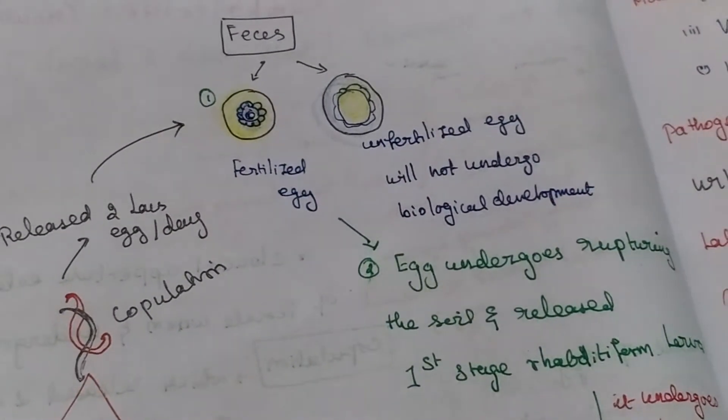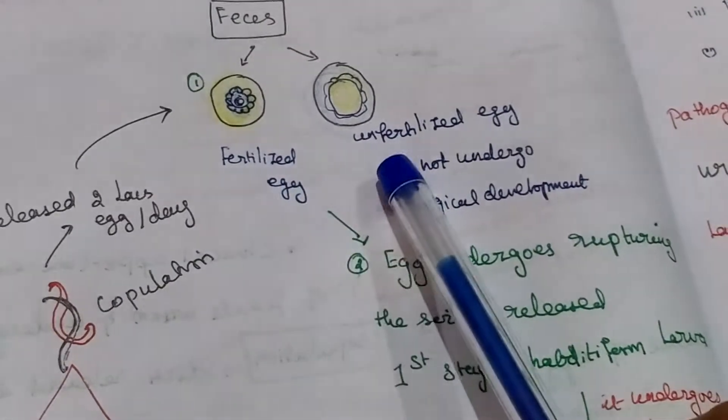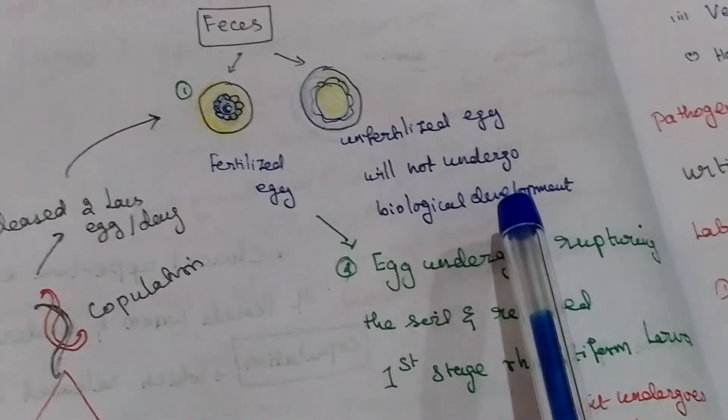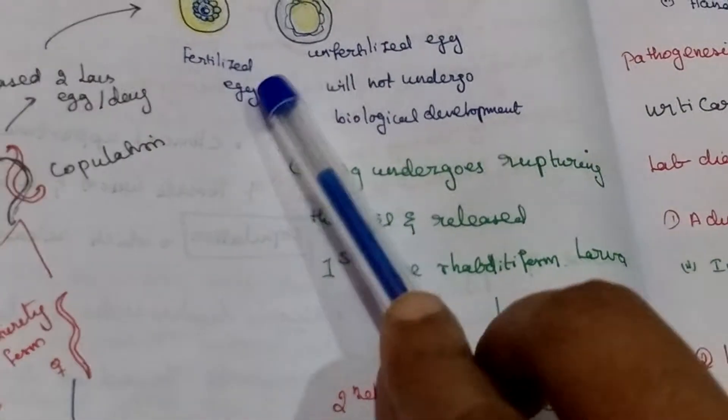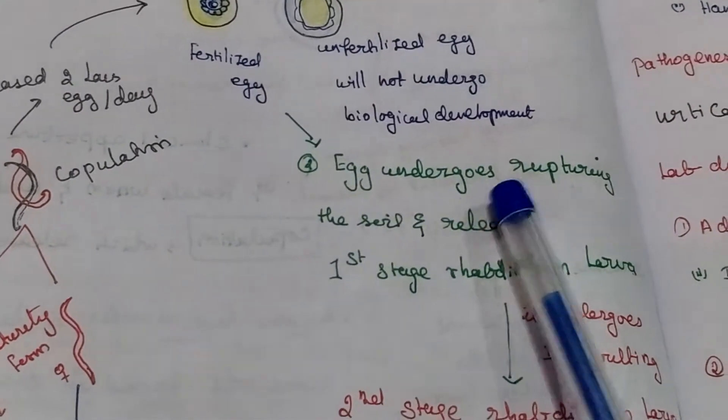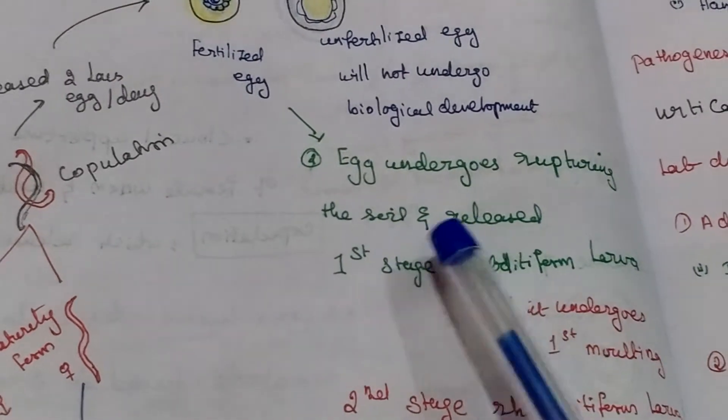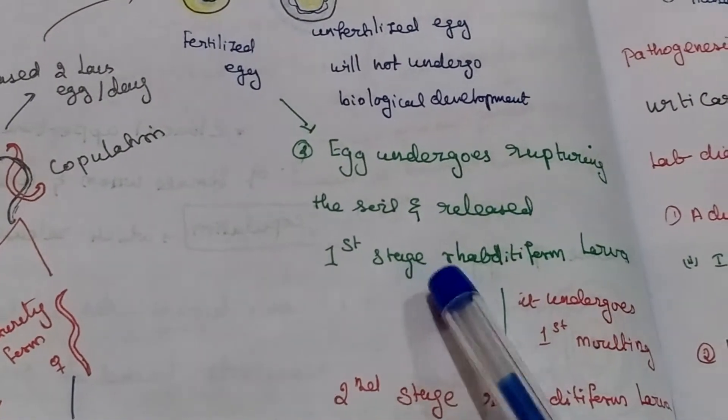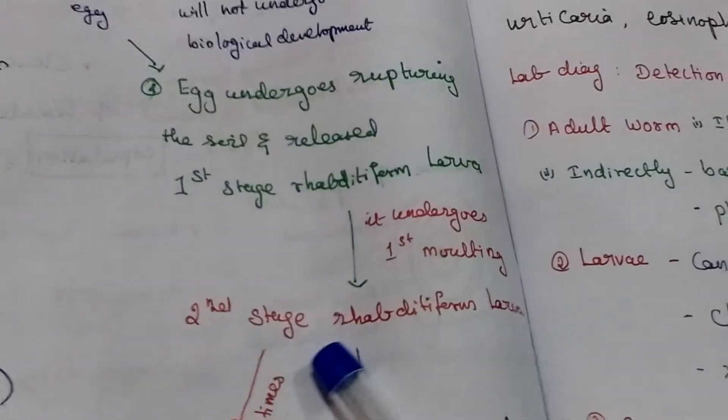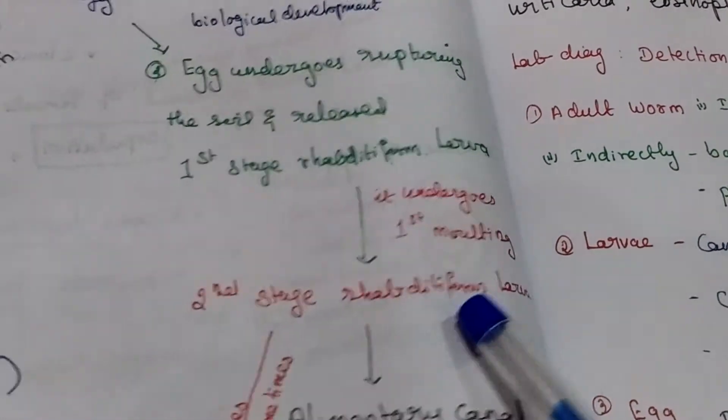Now we see the lifecycle. Human fecal material contains fertilized and unfertilized eggs. Unfertilized eggs do not undergo biological development. The fertilized egg undergoes biological development, ruptures in the soil, then releases the first stage rhabditiform larva. Then it undergoes molting and forms second stage rhabditiform form.